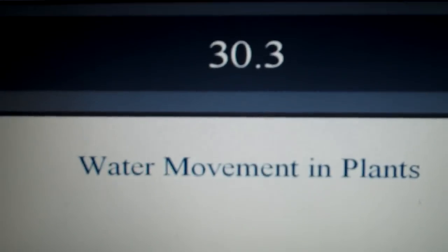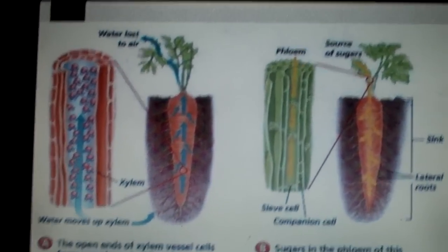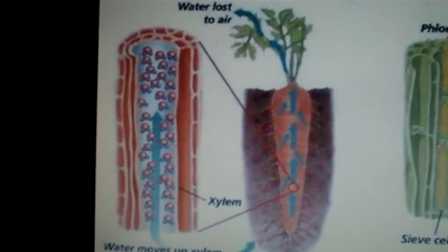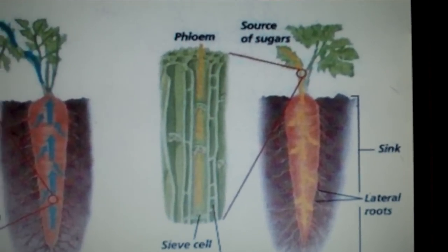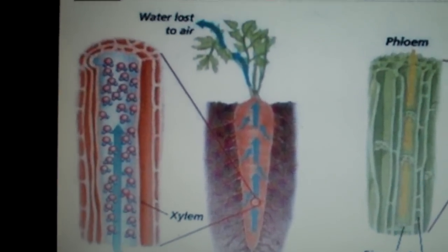Water movement in plants. Back to vascular tissue. We have two types of vascular tissue: the xylem and the phloem. For water movement, we're going to be focusing on the xylem in vascular tissue.